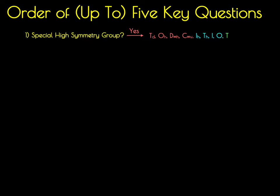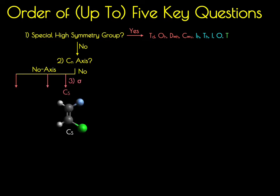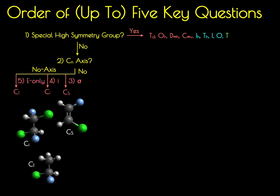If the answer is no — it's not in a high-symmetry point group — then you ask the second question: is there a rotational axis? If there is no rotational axis, you're in a very low-symmetry point group. If your molecule has a mirror plane, you're in the CS point group. If it has an inversion center and no mirror plane, you're in the CI point group. If the answer is no to both, then by process of elimination the molecule has no symmetry elements outside E, and you're in the C1 point group.